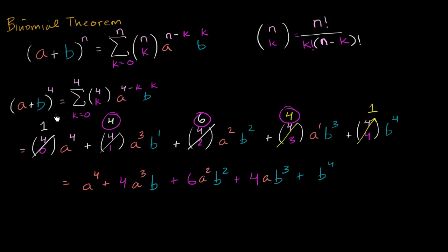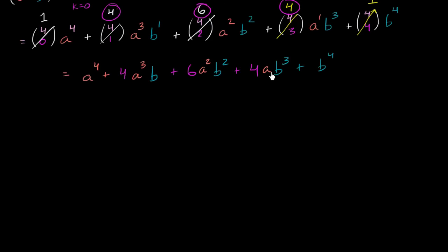In the previous video, we were able to apply the binomial theorem to figure out what a plus b to the fourth power is, in order to expand this out. It was a little bit tedious, but it would have been even more useful for higher powers like a plus b to the seventh or eighth. In this video, I want to show you there's another way of thinking about it using Pascal's triangle. We'll also think about why these two ideas are so closely related. So instead of using the traditional binomial theorem formula, I'm going to calculate it using Pascal's triangle and the patterns we know about the expansion.